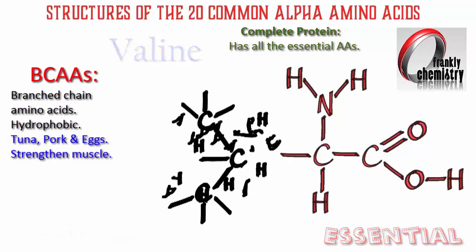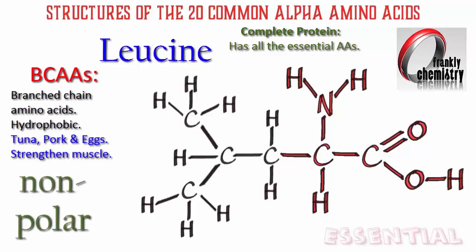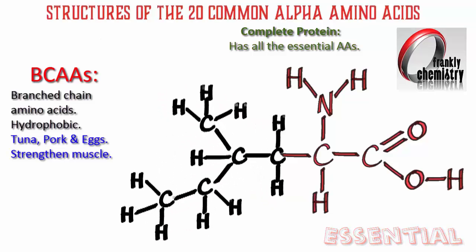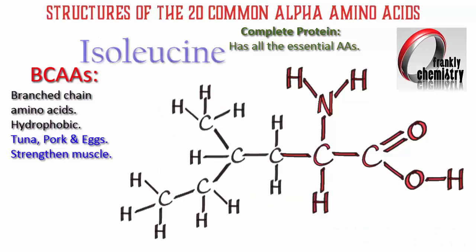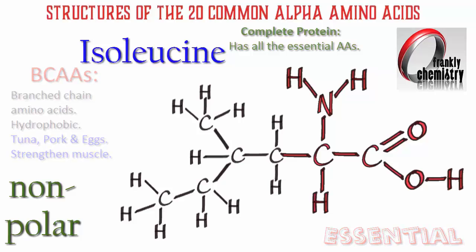So-called complete proteins are those that contain all the essential amino acids. Here's the second of our BCAAs, leucine. You'll see that it's a chain isomer of valine, and again it's an essential amino acid. Moving on to the third of our BCAAs, we've got an even longer hydrocarbon chain in the R group. This is isoleucine. These are nonpolar because the hydrocarbon chains have lots of dipoles, but the dipoles cancel. Isoleucine is also an essential amino acid.